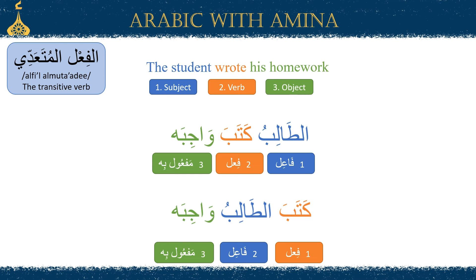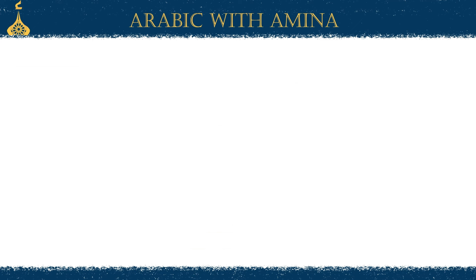'The student wrote his homework' is how we would say it in English. But in Arabic, we can say الطالب كتب واجبه with the same order as in English, or we can have the verb come first and say كتب الطالب واجبه. Both of these word arrangements have the same meaning: 'the student wrote his homework.'